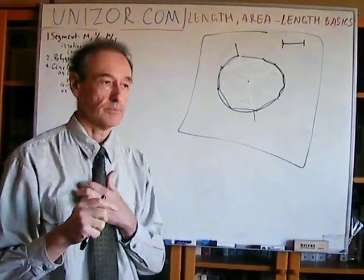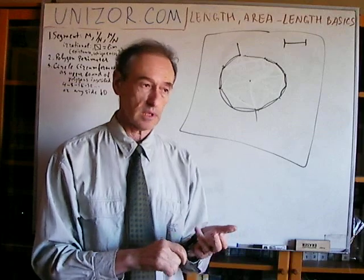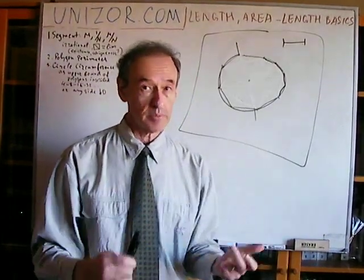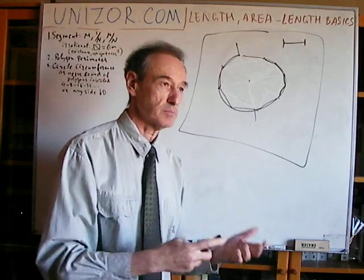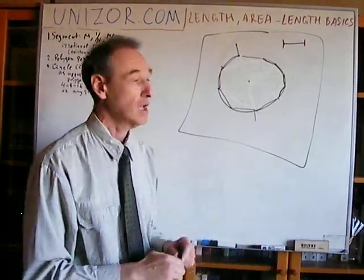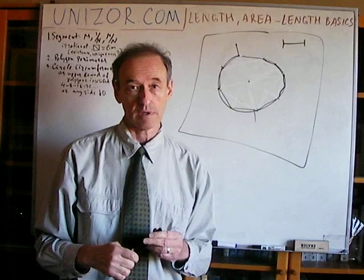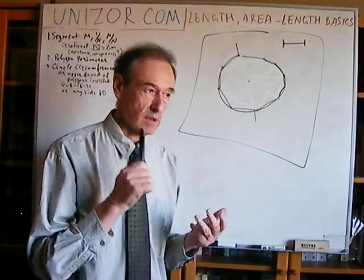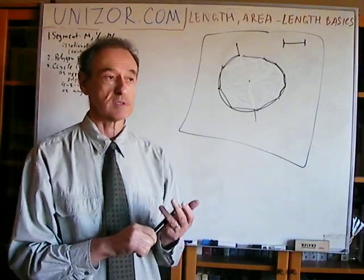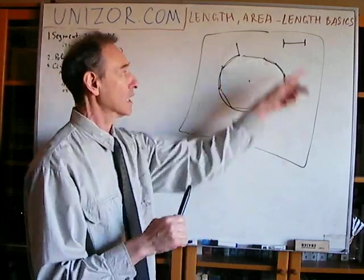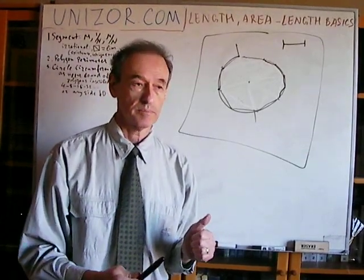If you remember from the theory of limits: if you have a sequence which is, number one, monotonically increasing, and number two, has an upper limit — it has a limit. And this limit, by definition, would be the length of the circle, the circumference of the circle. So we very much rely on the fact that our sequence of perimeters is a monotonically increasing sequence that has an upper bound, and that's enough to say there is a limit for this particular sequence.